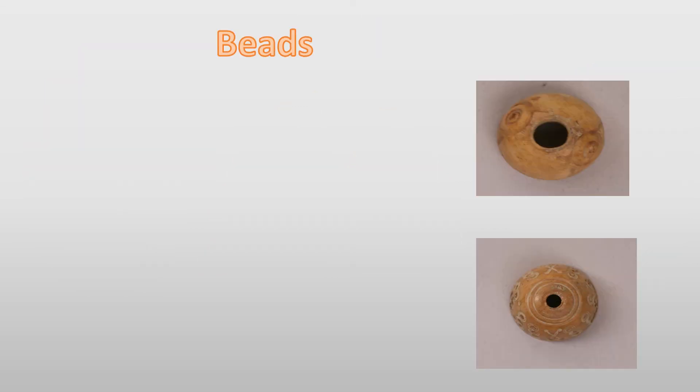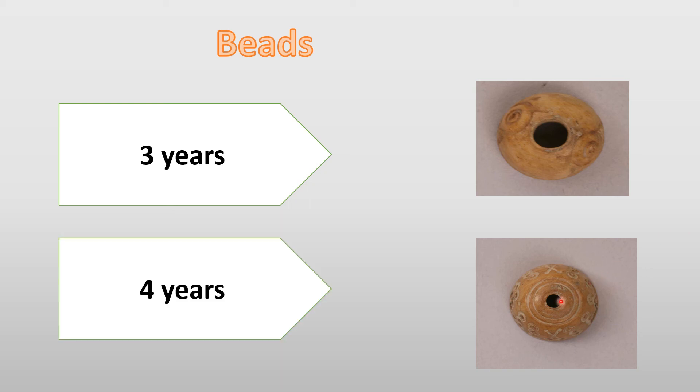Second B, the beads. We will give the child beads with big hole and small hole and string. If he can enter the string inside the big hole, he will be three years. If he could do it in a small hole, then he will be four years.